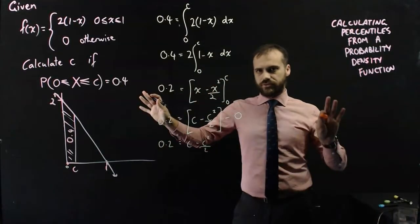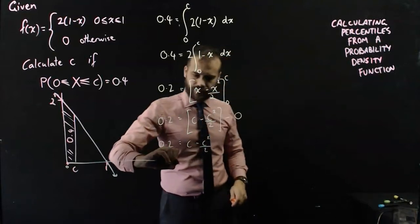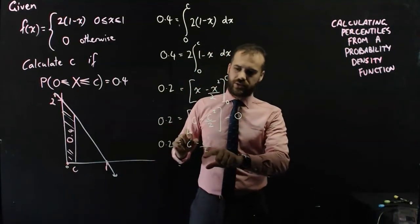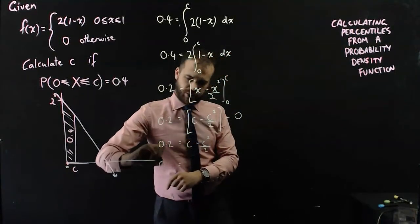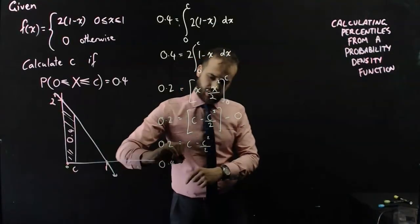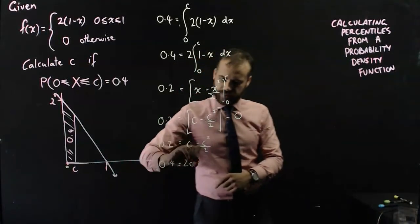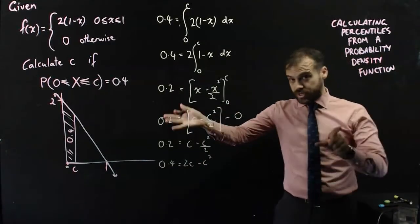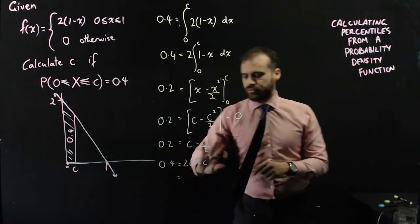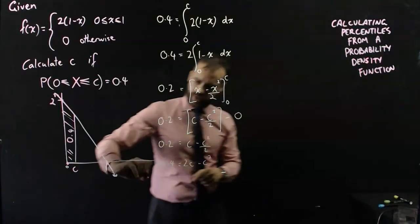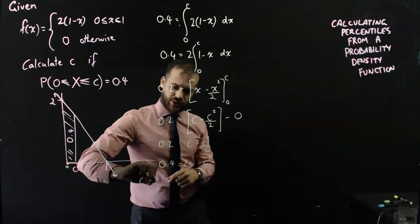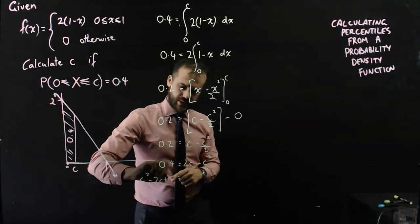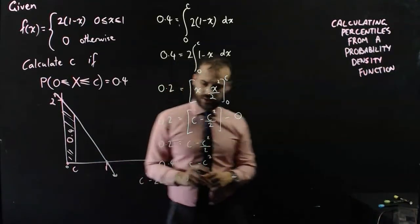Now if I multiply through by 2, just to get rid of that 2 that's sitting on the bottom, I get 0.2 times 2, which is 0.4. I get C times 2, which is 2C, and I get negative C squared. Now if I rearrange that and throw everything on the left-hand side, I get C squared minus 2C plus 0.4 equals 0.